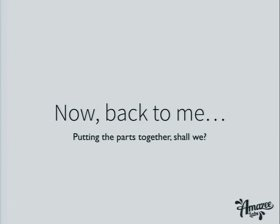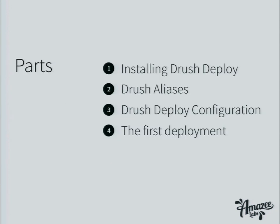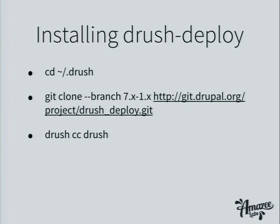Should we put all parts together to see what's needed to do with Drush Deploy? Of course. We start with installing Drush Deploy, then cover Drush aliases, then the Drush Deploy configuration, and we'll do our first deployment. Installing Drush Deploy is rather easy — we just go to the Drush directory in your home directory, git clone the actual branch, and run drush cc drush. After running drush without any arguments, you should see the Drush Deploy actions.